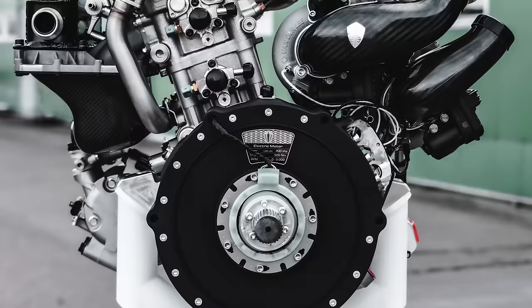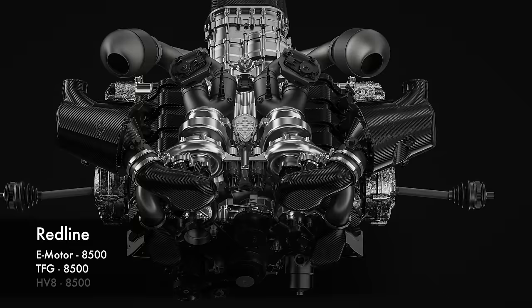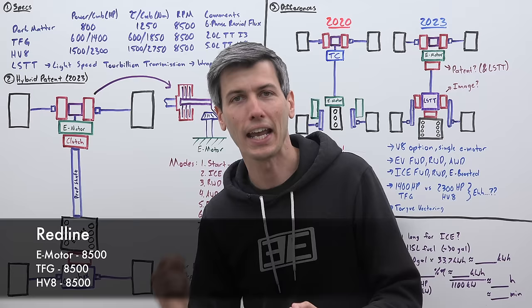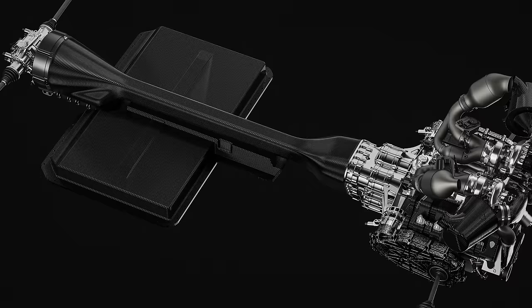One interesting thing to note is that the dark matter electric motor, the tiny friendly giant and the HV8 all have the exact same red line of 8500 RPM. So maybe there is something going on where they are allowing these things to match up in speeds.